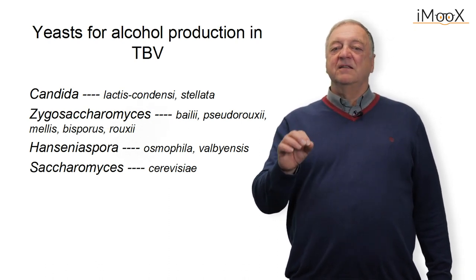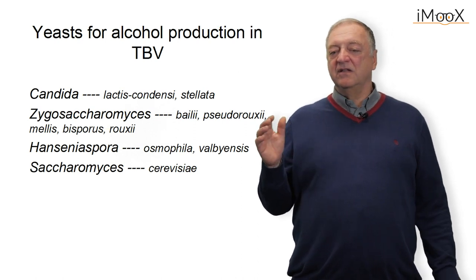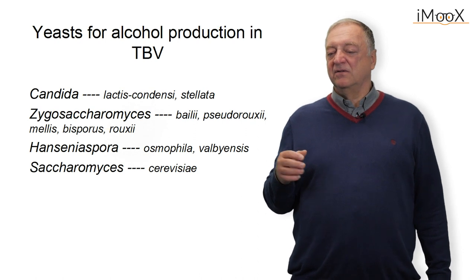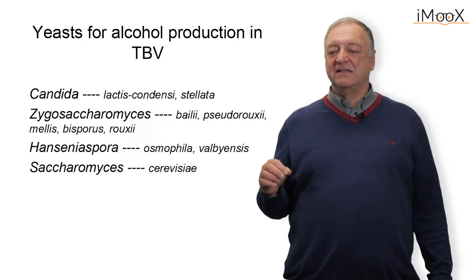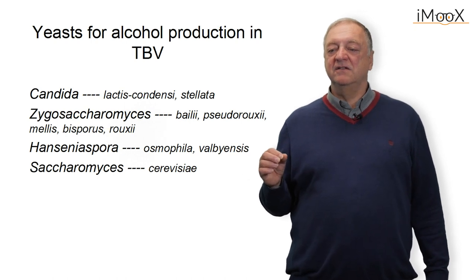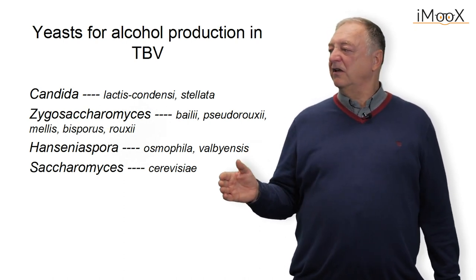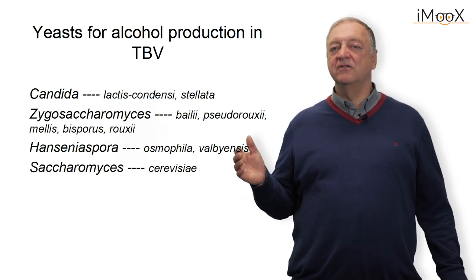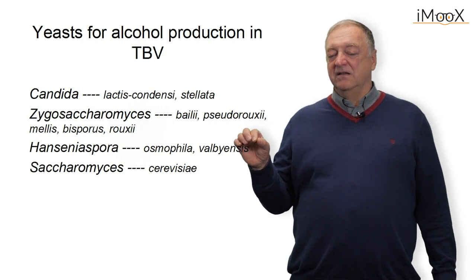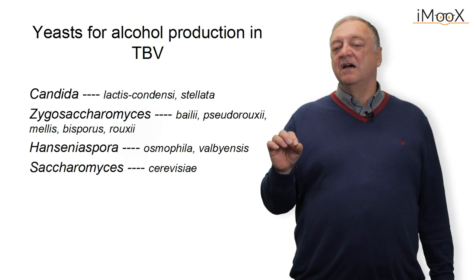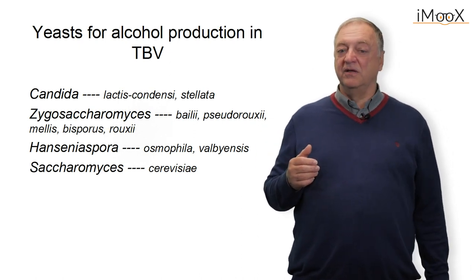The first step in acetic acid production is the fermentation of the carbohydrates to ethanol, for which we can use different yeast species. Sometimes this is a very traditional process where yeast present in the environment starts the fermentation, or yeast is added as a high-concentration inoculum. This step is for alcohol production. The acetic acid formation occurs under oxidative conditions, under which the yeast are no longer as active as they are during the anaerobic step.